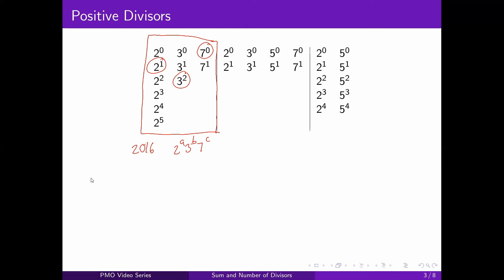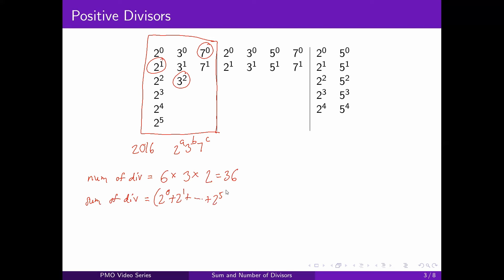This representation is neat because now we can easily find the number of divisors. The number of divisors is the number of ways to choose one number from each column. The first column has six choices, the second column has three choices, the third column has two choices. So if you multiply those together, there are 36 divisors. The sum is a little trickier — we use a neat factoring. You can actually factor the sum of divisors.